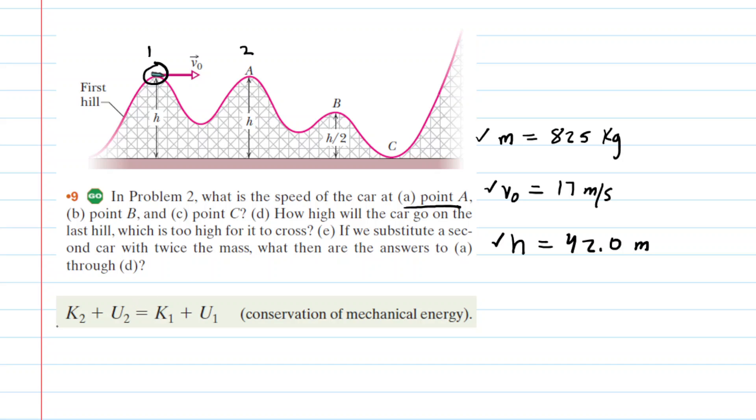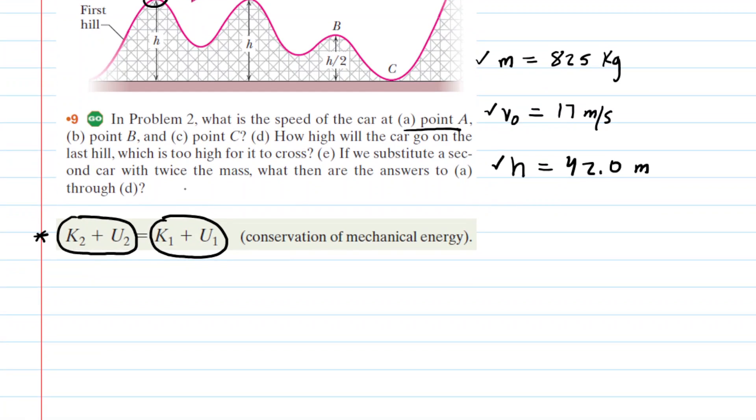We use the conservation of mechanical energy, which is given by this equation right now. We can see that the sum of the kinetic and potential energies at point two must equal the sum of the kinetic and potential energies at point one. Now, it will be useful to expand these equations. And so let's go ahead and do so for the kinetic and potential energies. And now that we've expanded each of the four terms, we'll notice that the mass appears in all four terms. And because of that, we can divide every term by the mass m, and that will effectively cancel out the masses.